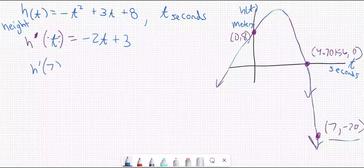And then their question is, how fast is it moving at 7 seconds? So we just put 7 in here. And it looks like negative 14 plus 3, which is negative 11.